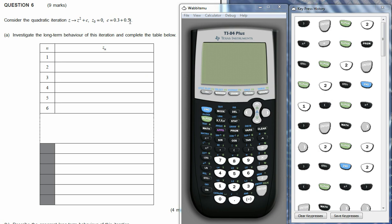So we've got a question here from a previous exam paper. We've got quadratic iteration going from z goes to z squared plus c, the initial value of z is zero, and the value of the constant c is 0.3 plus 0.5i. So what we're going to do is use the graphics calculator to calculate the first few iterations of this particular quadratic iteration.